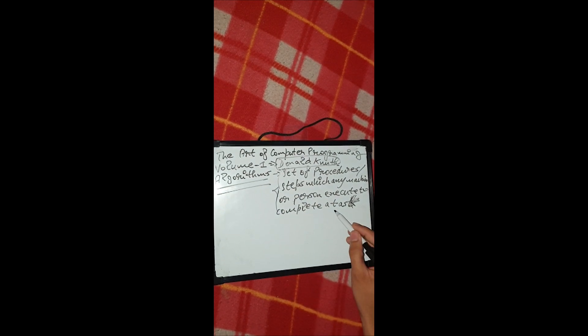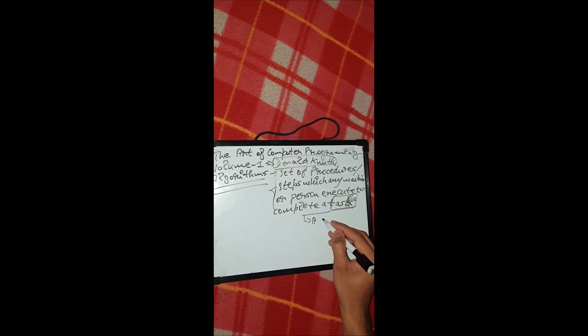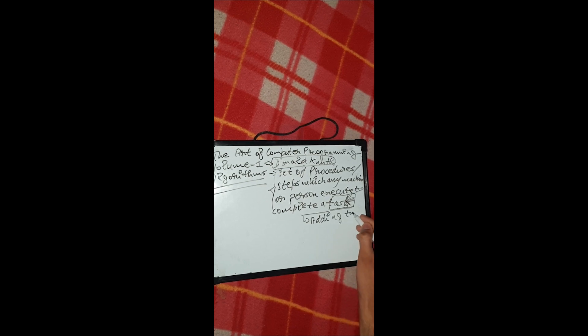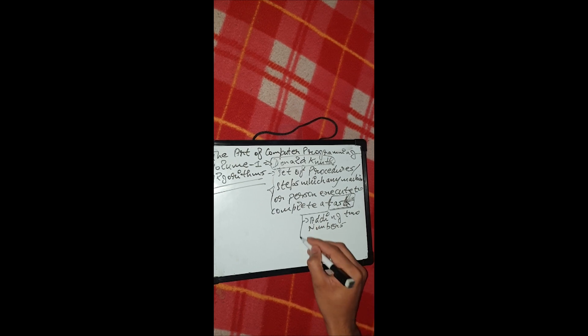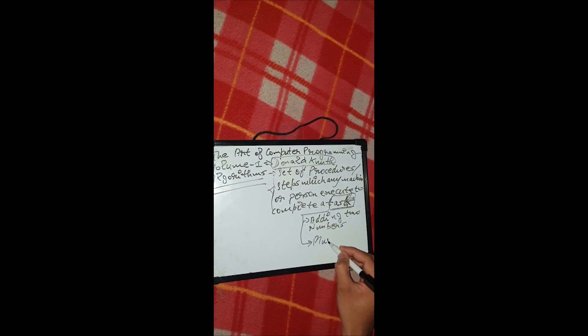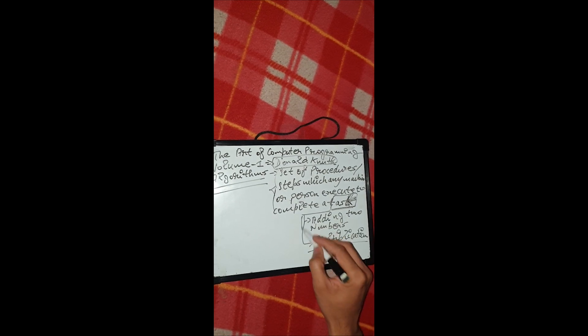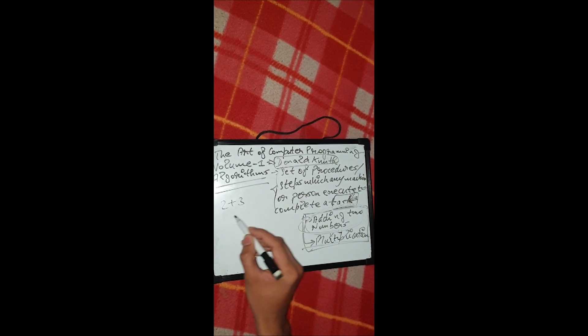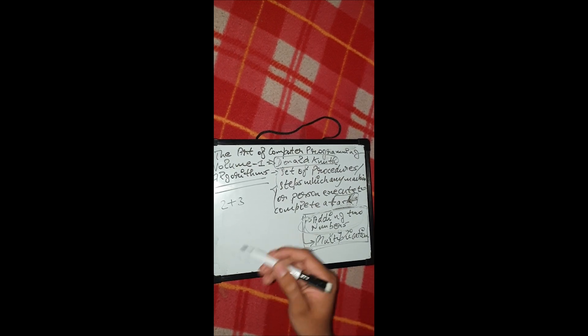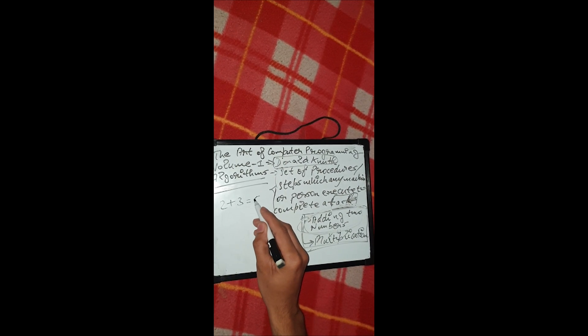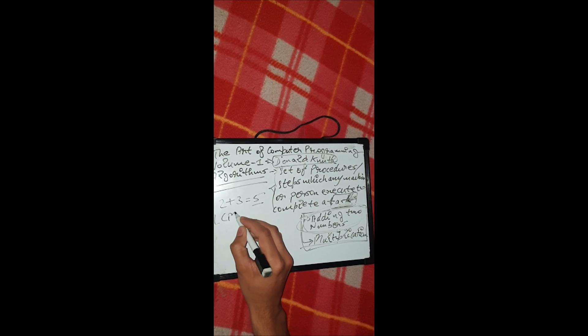As described by Donald Knuth, an algorithm is a set of procedures or steps which any machine or person executes to complete a task. This task can be anything — it can be just addition, adding two numbers, multiplication, or whatever. These are basic algorithms that a person can think of, like what steps are involved in adding two numbers, such as two plus three.